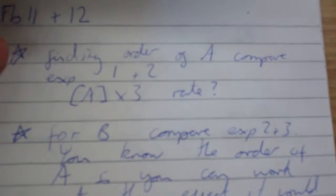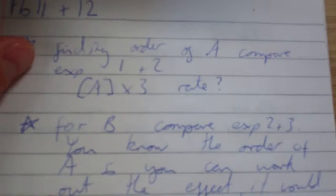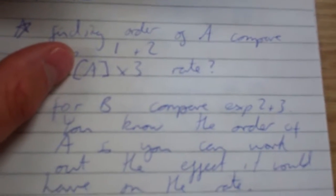So first of all, find the order of A by comparing exponents 1 and 2. A concentration gets times by 3, what happens to the rate?